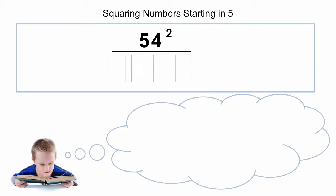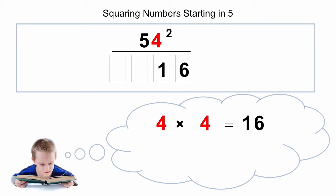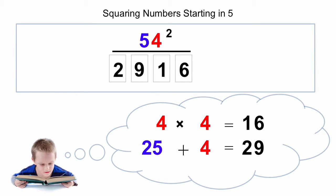Now let's look at squaring numbers starting with 5. We first look at the units digit — in this case it's 4 — and we square that digit. So 4 times 4 is 16. So 16 makes up the last two digits of the answer. Now to find the first two digits, the tens digit is 5, so we know that 5 squared is 25. We add the units digit to 25: 25 plus 4 is 29, and there's our answer: 2,916.